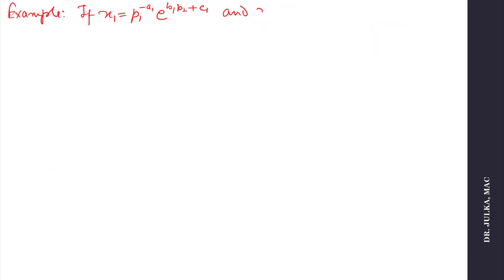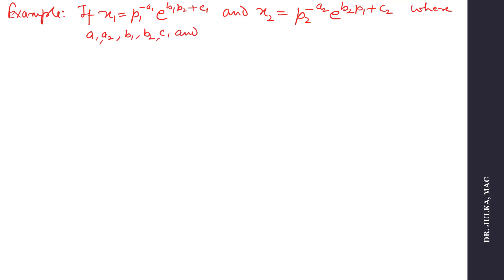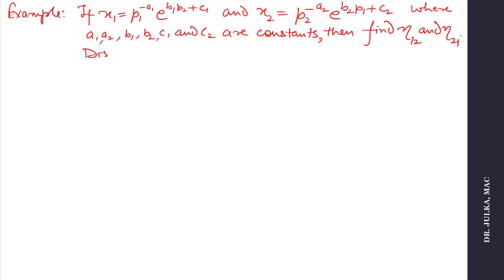Next example. If the joint demand functions of two products X1 and X2 are X1 = P1^(−A1) · e^(B1·P2 + C1) and X2 = P2^(−A2) · e^(B2·P1 + C2), where A1, A2, B1, B2, C1 and C2 are constants, then find η12 and η21, and discuss whether X1 and X2 are competitive or complementary products.